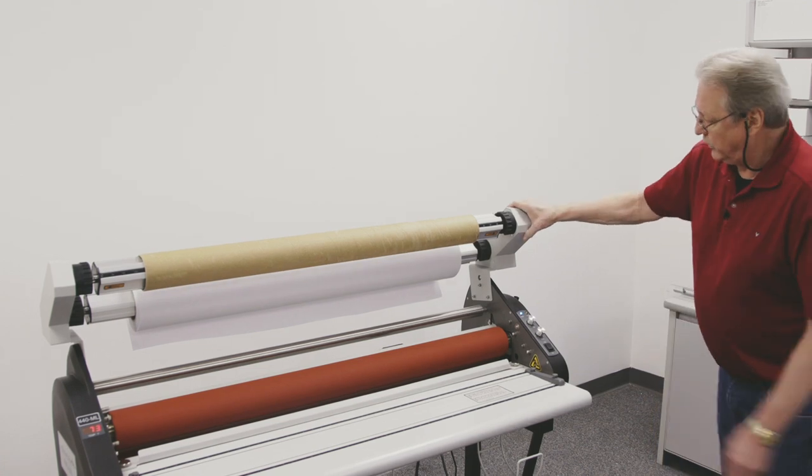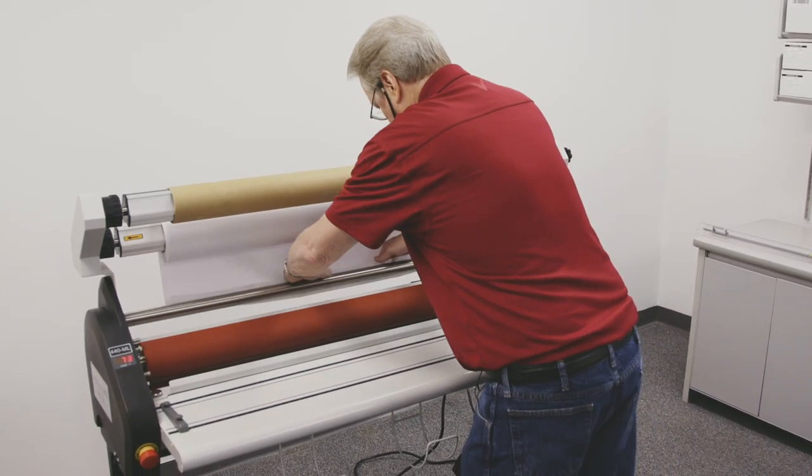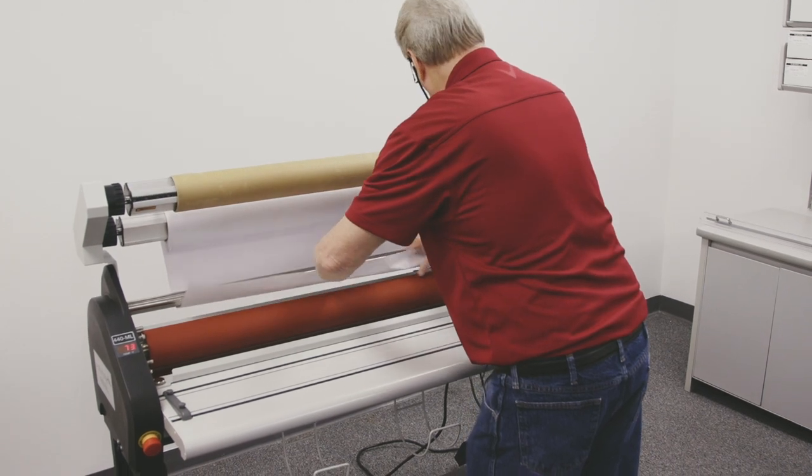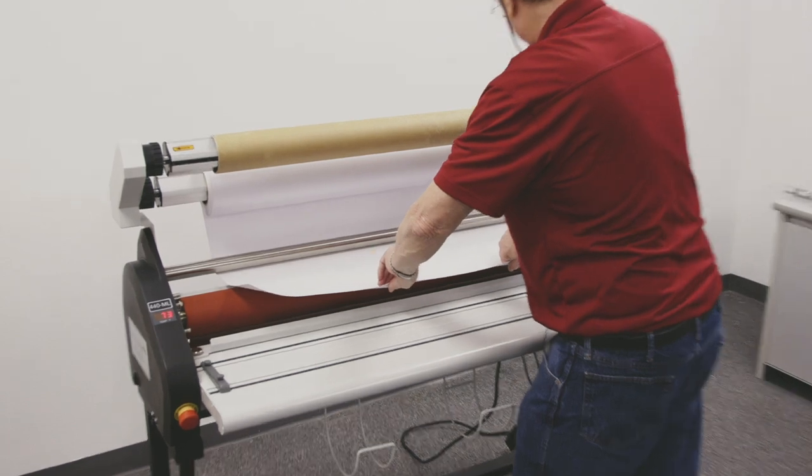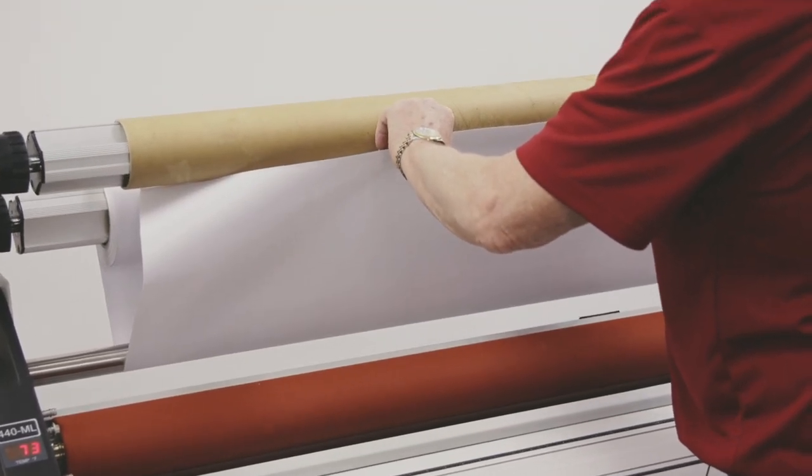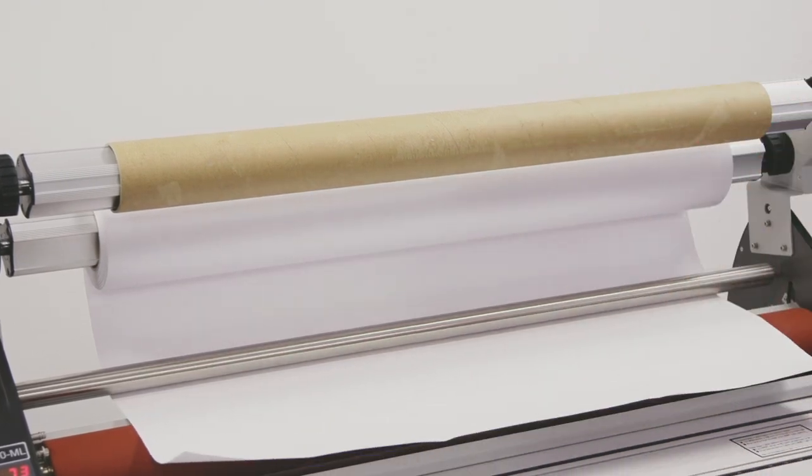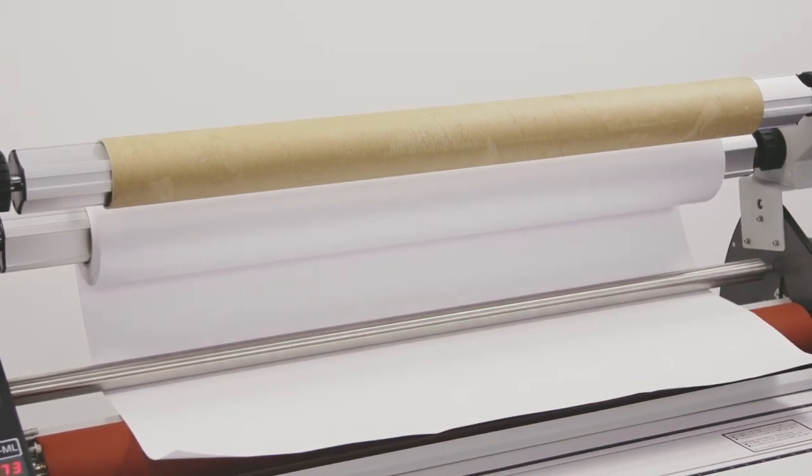So what I'll do is now I'm going to bring my film through like this. I'm going to go underneath my idle bar and then I'm going to bring it up to this and attach it to the rewind tube. So I'll take a piece of tape, a piece of masking tape.